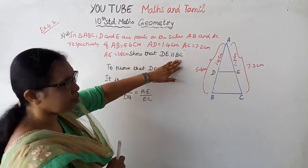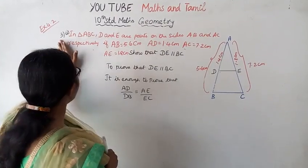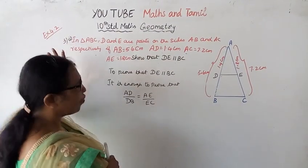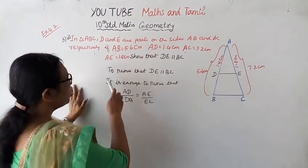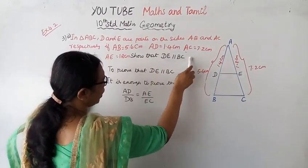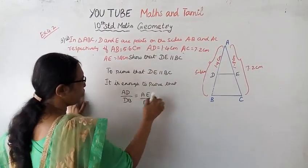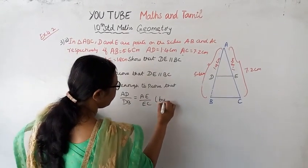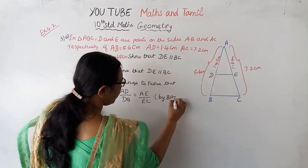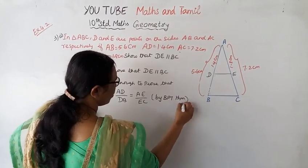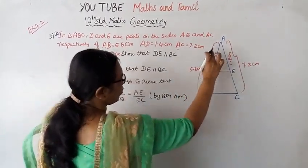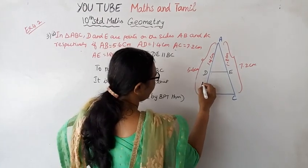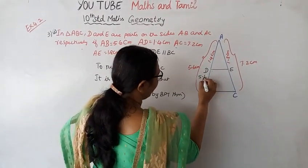We need to prove that DE is parallel to BC. To prove that DE is parallel to BC, it is enough to prove that AD by DB equals AE by EC. By BPT theorem, if we find DB, it will be 5.6 minus 1.4.